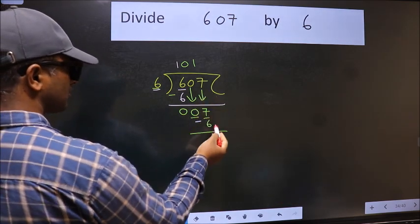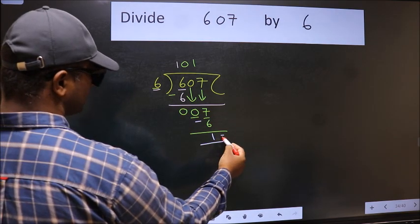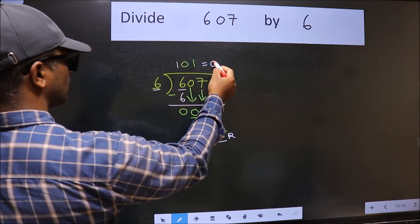No more numbers to bring it down. So we stop here. This is our remainder and this is our quotient.